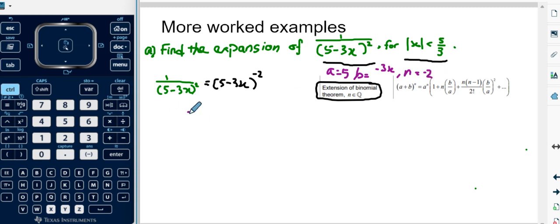So with this in mind, we can now write a to the power of n as 5 to the power of negative 2. I put a big bracket here and the first term is 1. So this is going to be 1 plus the next term, I'm going to use green.